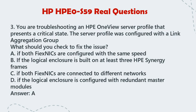Question 3: You are troubleshooting an HPE OneView server profile that presents a critical state. The server profile was configured with a link aggregation group. What should you check to fix the issue? a. If both PHY-XNICs are configured with the same speed. b. If the logical enclosure is built on at least 3 HPE Synergy Frames. c. If both PHY-XNICs are connected to different networks. d. If the logical enclosure is configured with redundant master modules. Answer: a.